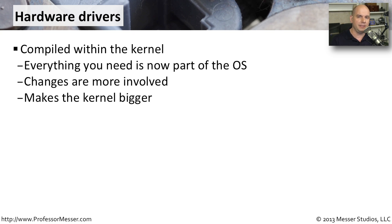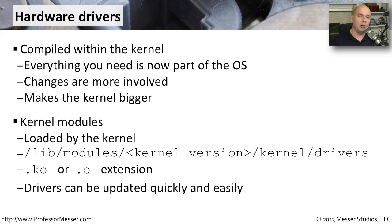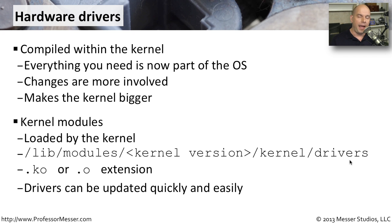If you're trying to run a lean operating system, you want to keep down kernel bloat. That's why you'd use the other method: adding and removing device drivers through kernel modules. As the name implies, these are modular — you can load, change, and unload them without recompiling the kernel. These modules are loaded by the kernel and found in a subdirectory under /lib/modules, organized by kernel version, then a kernel directory, then a drivers directory. You'll recognize them by their .ko or .o file extension.